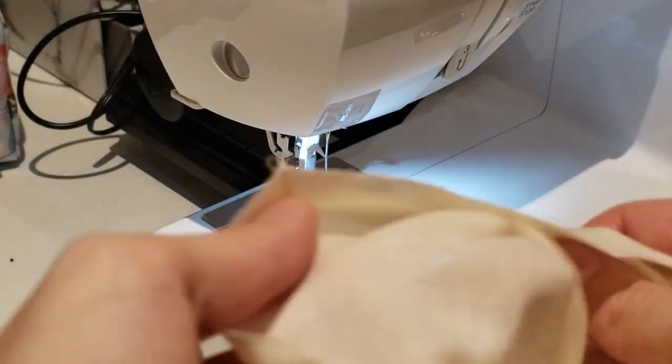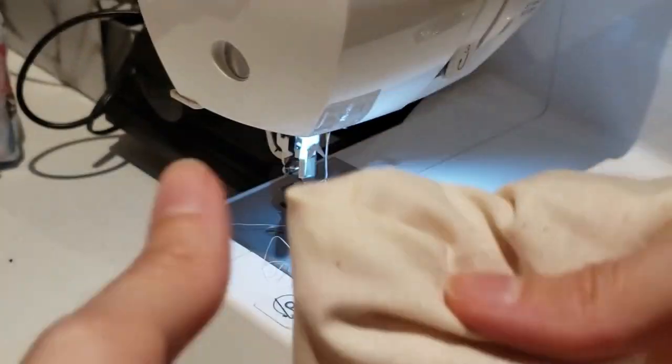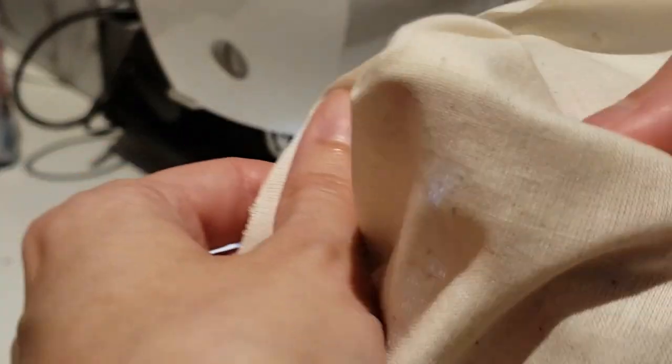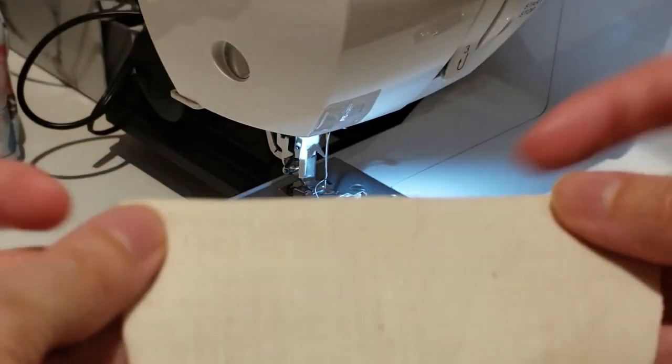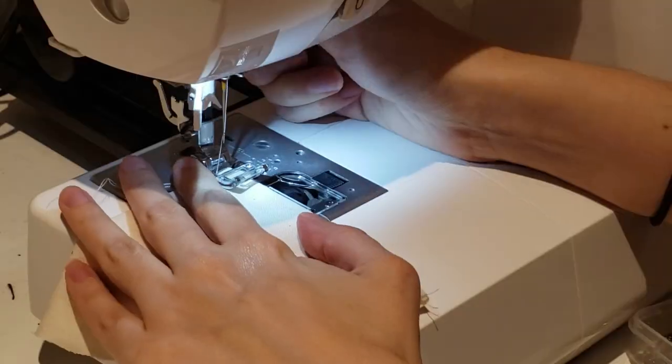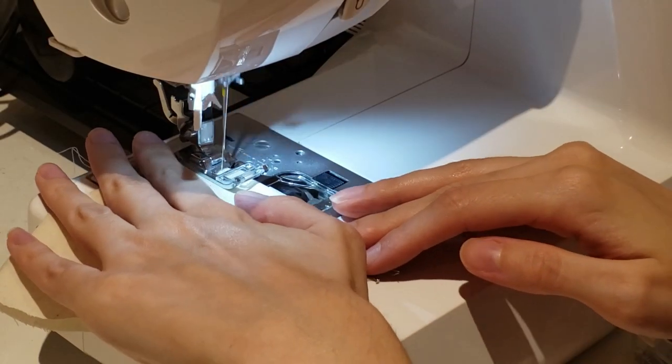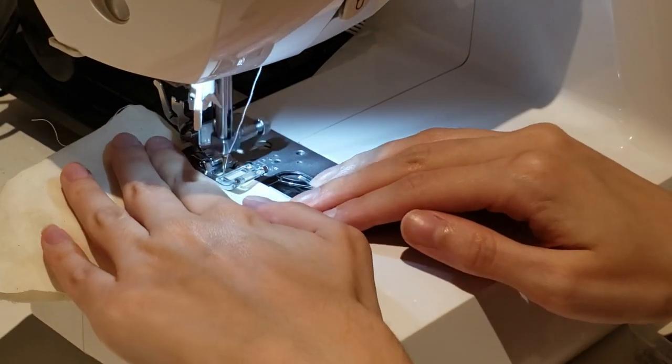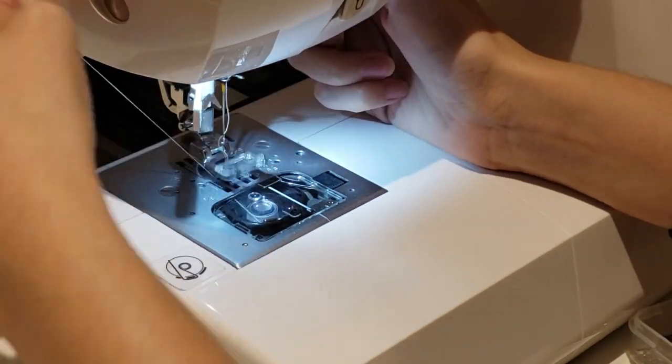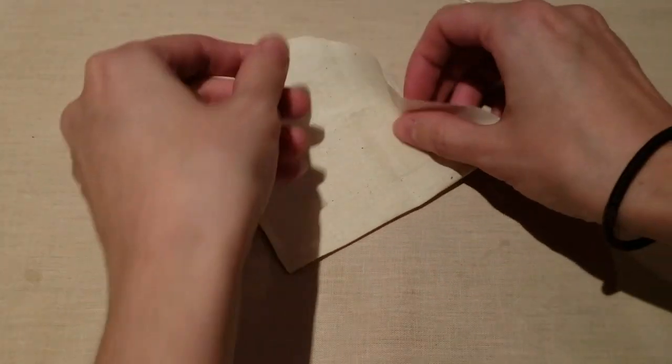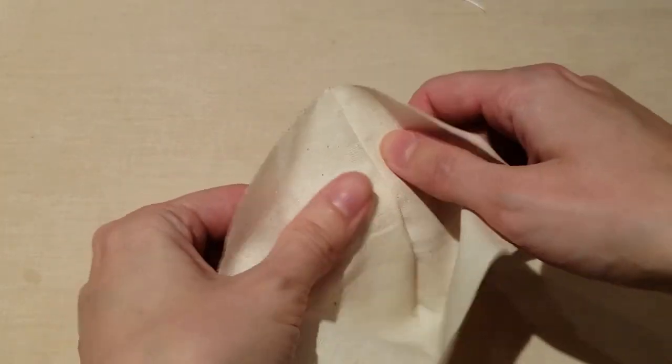Next, trim the edge of the fabric to about one eighth of an inch, and flip the filter so that the seam is on the inside. We're making what's called a French seam, so stitch again about one quarter of an inch away from the folded seam line. This encases the first seam and conceals the jagged, fraying edges of the fabric.